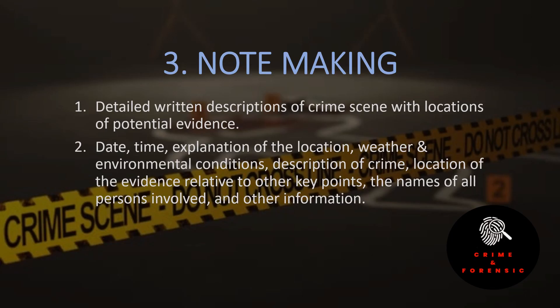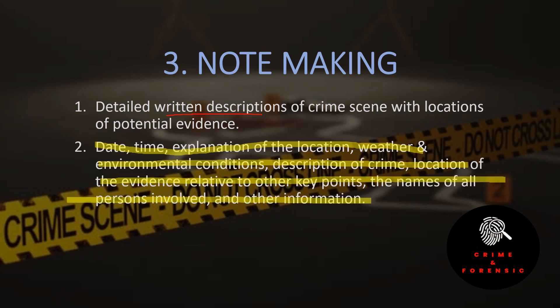The last method of crime scene documentation is note making. Note making is a detailed written description of the crime scene with location of potential evidences, including: date, time, explanation of the location, weather and environmental conditions, description of the crime, location of evidence relative to other key points, and the names of all persons involved, and other information. All information regarding the crime scene is included in note making in written form, so that memory loss does not occur over time and people involved do not forget these details.